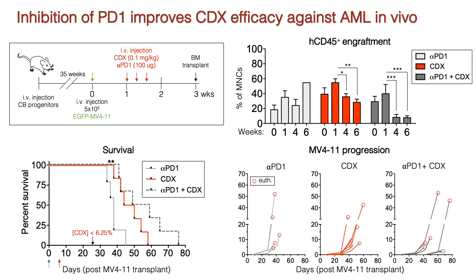We observed that T cells in CDX-treated mice overexpressed the immune checkpoint receptor PD-1 relative to untreated mice, and hypothesized that PD-1 inhibition could enhance AML clearance by preventing T cell exhaustion.